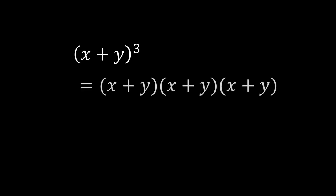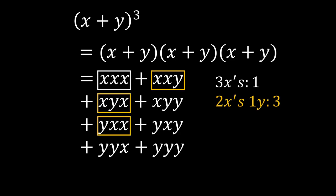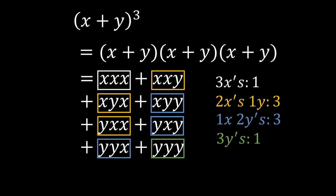Now consider x plus y cubed. To expand, we do the same process. We choose an x or a y from each bracket. And by going over all the possible choices, we get these terms. I will group the terms with the same number of x's and y's together and also write them using powers. And here, you might see the connection to combinations.